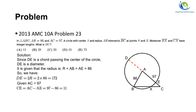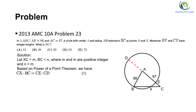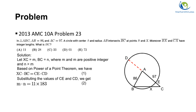Given that AC equals 97, CE equals AC minus AE, which gives 11. CD equals CE plus DE, which gives 183. Since segments BX and CX are integers, segment BC is also an integer. We denote XC as M and BC as N. Applying the Power of a Point Theorem gives equation 1, and substituting CE and CD yields equation 2: M times N equals 11 times 183.